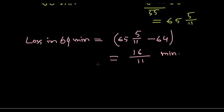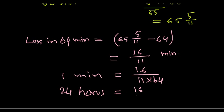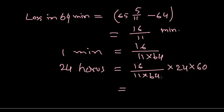If this is the loss in 64 minutes, what's the loss in 24 hours? Loss in one minute will be 16 divided by 11 times 64. Then loss in 24 hours is that value multiplied by 24 times 60 to convert hours into minutes.